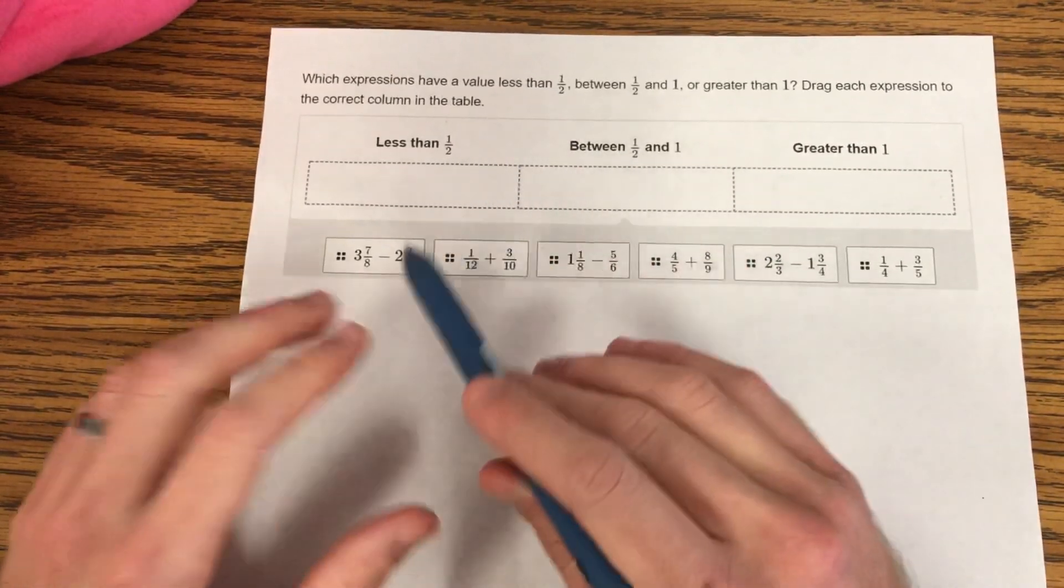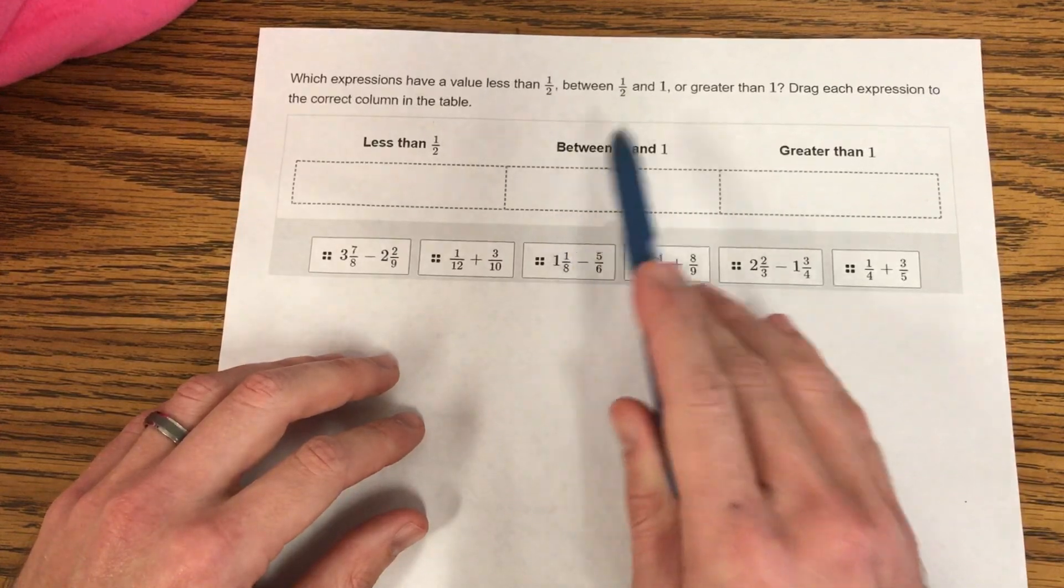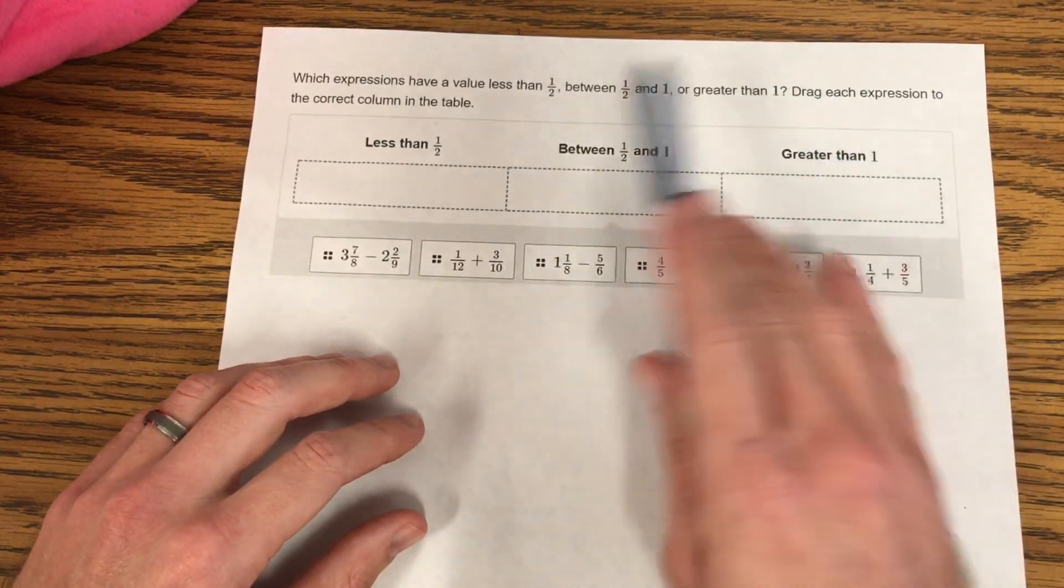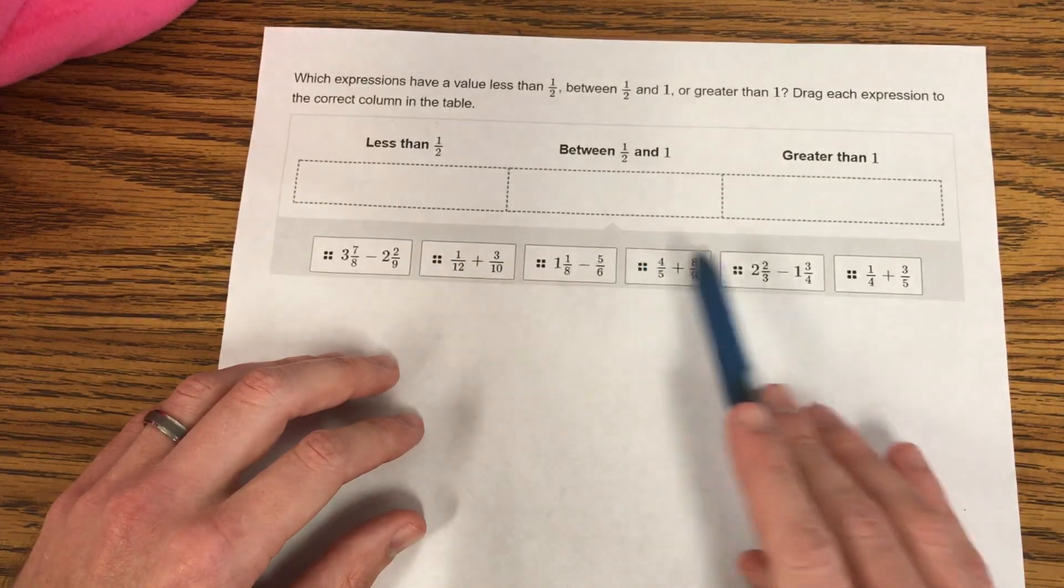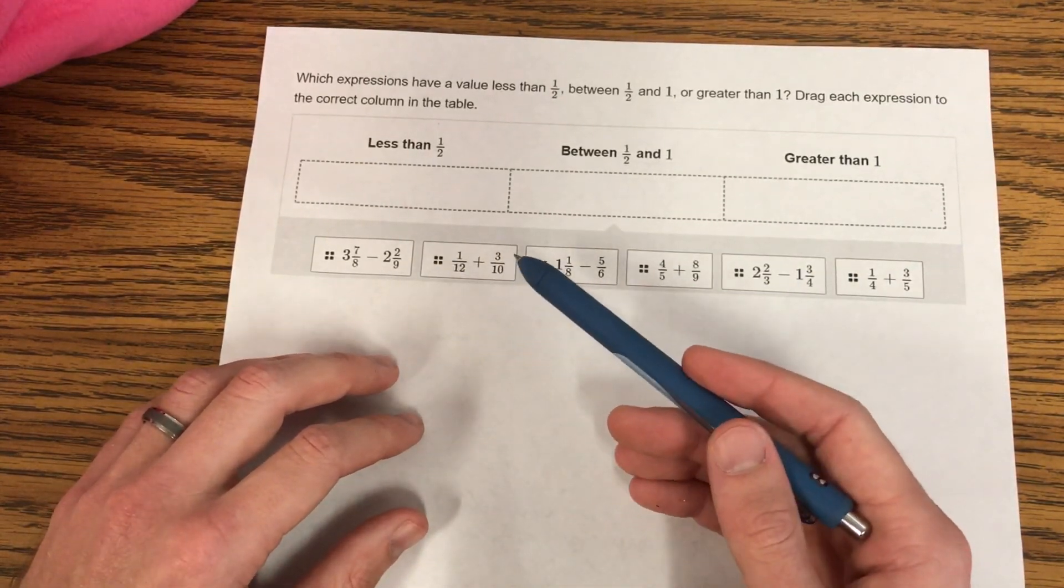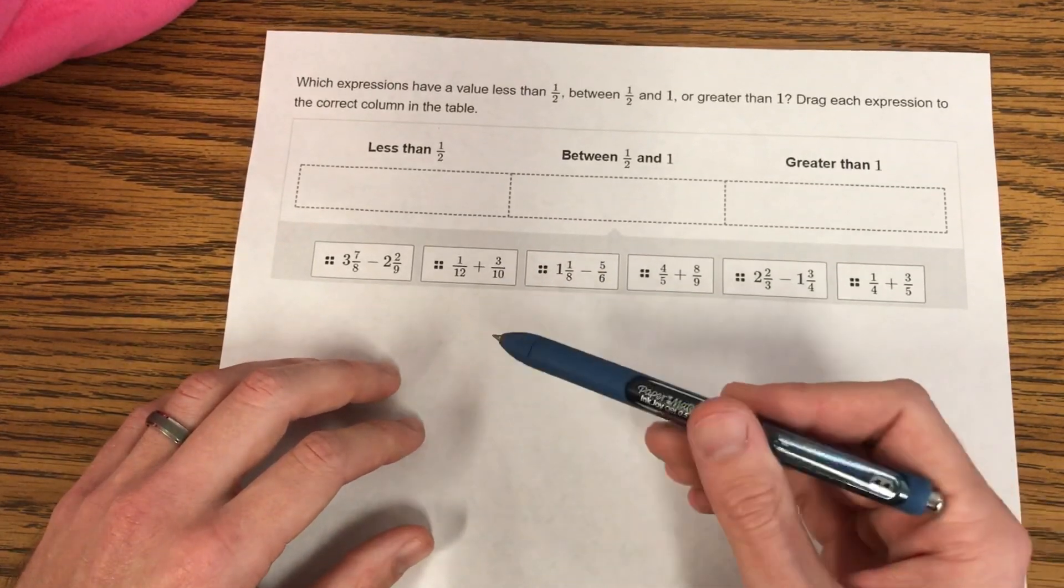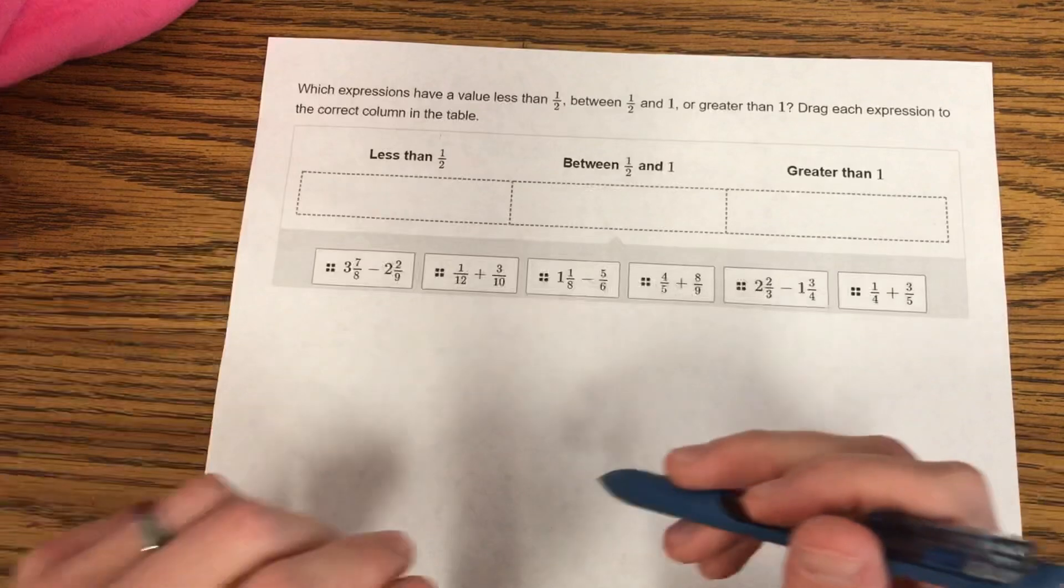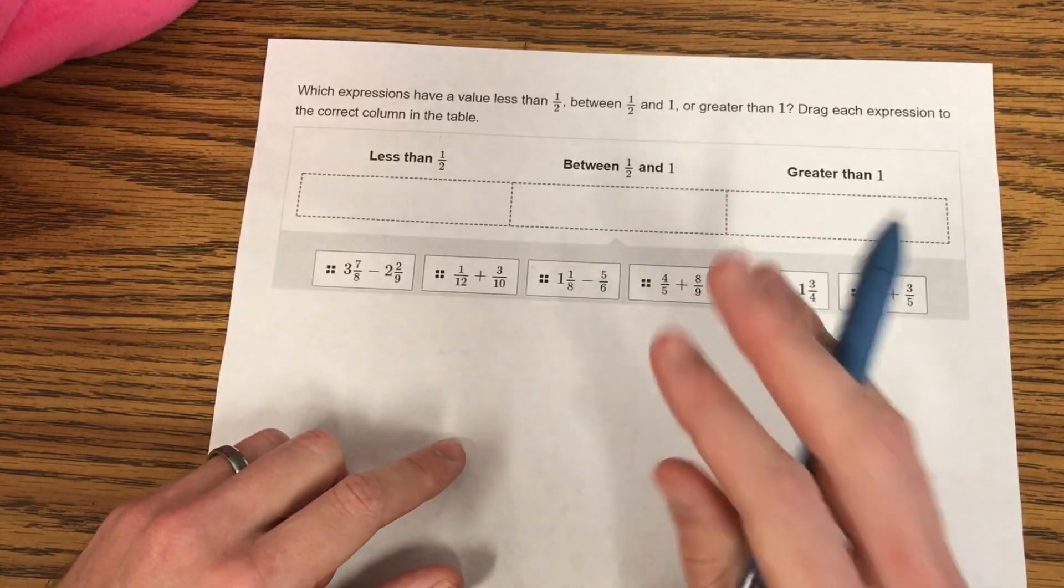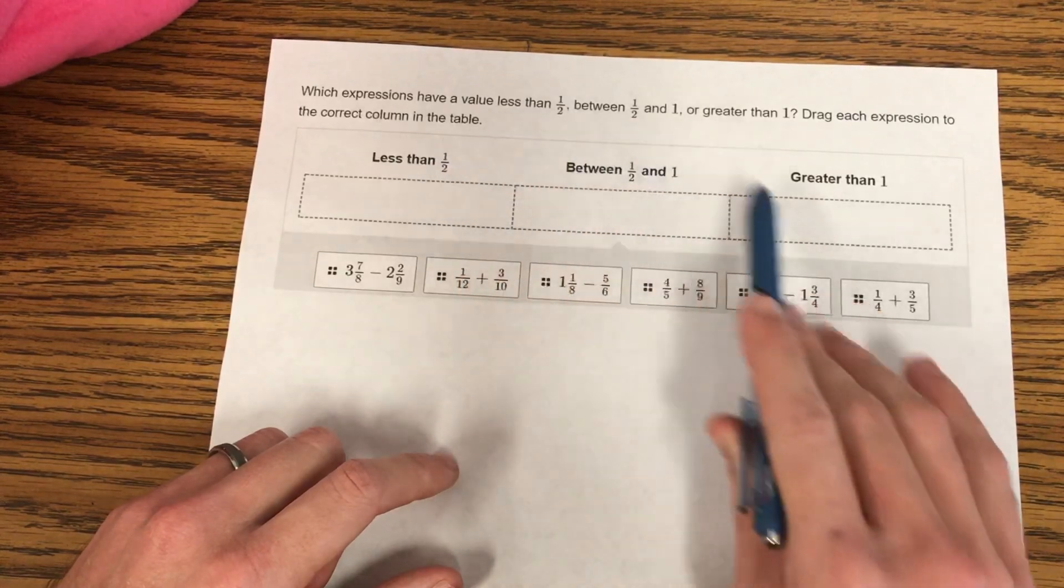So this question says, which expressions have a value less than 1/2, between 1/2 and 1, or greater than 1? Drag each expression to the correct column in the table. So there's six expressions here, and this one was actually partial credit. So you could earn part of the points if you got some of them correct. But we're going to know strategies to help us get them all correct. Here's what I would suggest: look for the ones that are pretty obvious right away that would fit in the less than 1/2 and the greater than 1 categories.